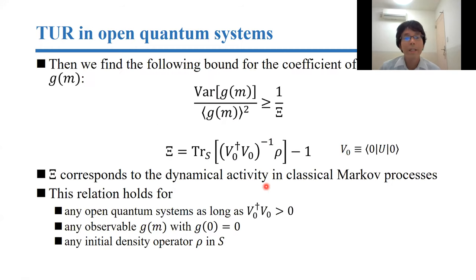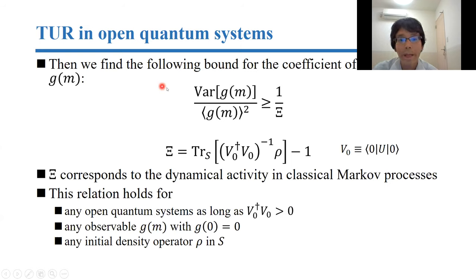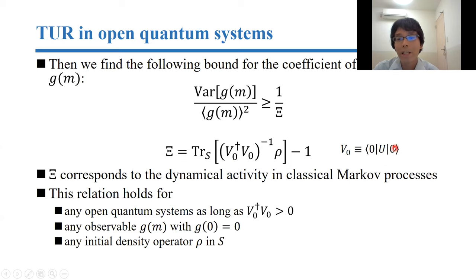By using quantum estimation theory, I can show that g_m satisfies this kind of thermodynamic uncertainty relation; a derivation will be shown at the end of my talk. Here g_m is the variance, and this is the average. This Ξ is defined by a given quantity, and V_0 is a Krauss operator corresponding to a jump from the zero environment state to the zero environment state. This Ξ corresponds to the dynamical activity in classical Markov processes.